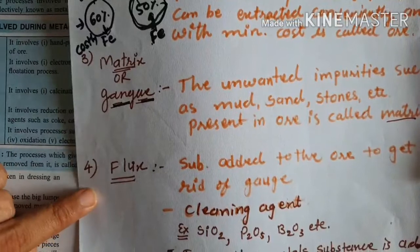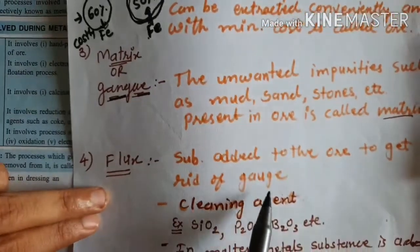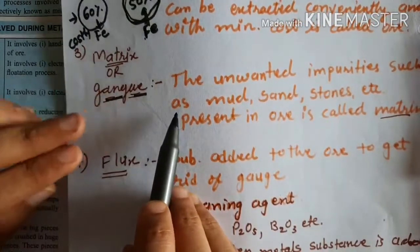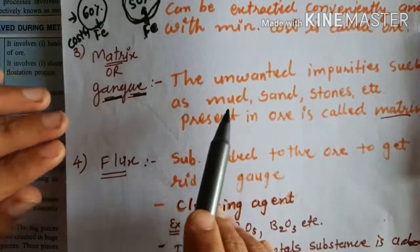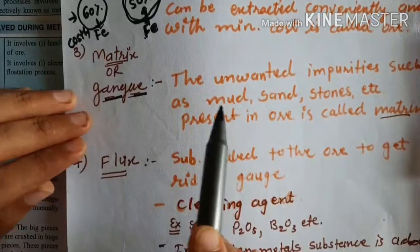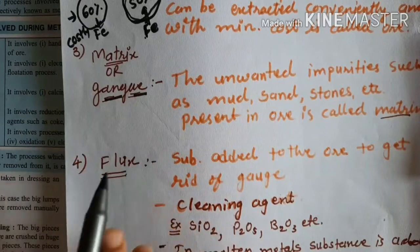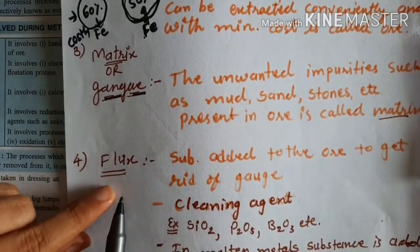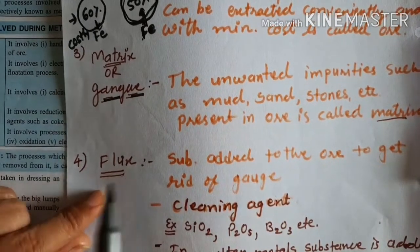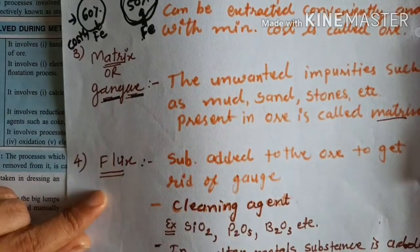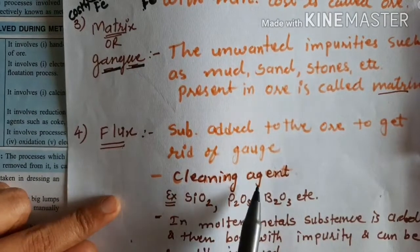The next term is 'flux.' Flux is the substance added to the ore to get rid of the gang. During extraction, the gang or matrix is present in the ore. By adding flux into that ore, the flux reacts with the impurity and removes it. We can say flux is like a cleaning agent. Examples of flux include silicon oxide, P2O5, P2O3, etc. These are fluxes added into the molten metal during extraction when high heat is applied and the ore melts.